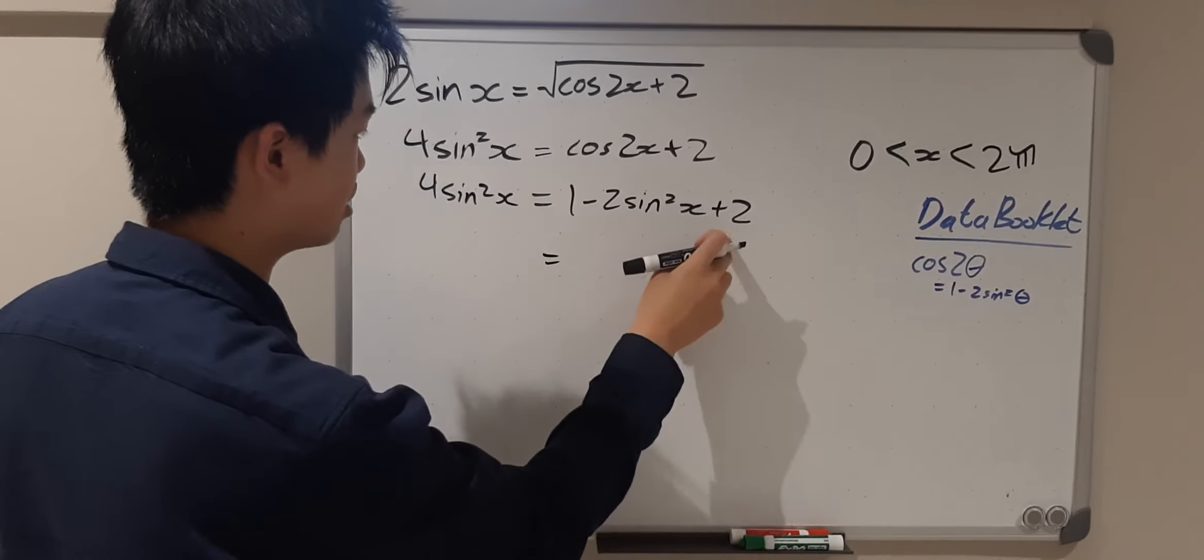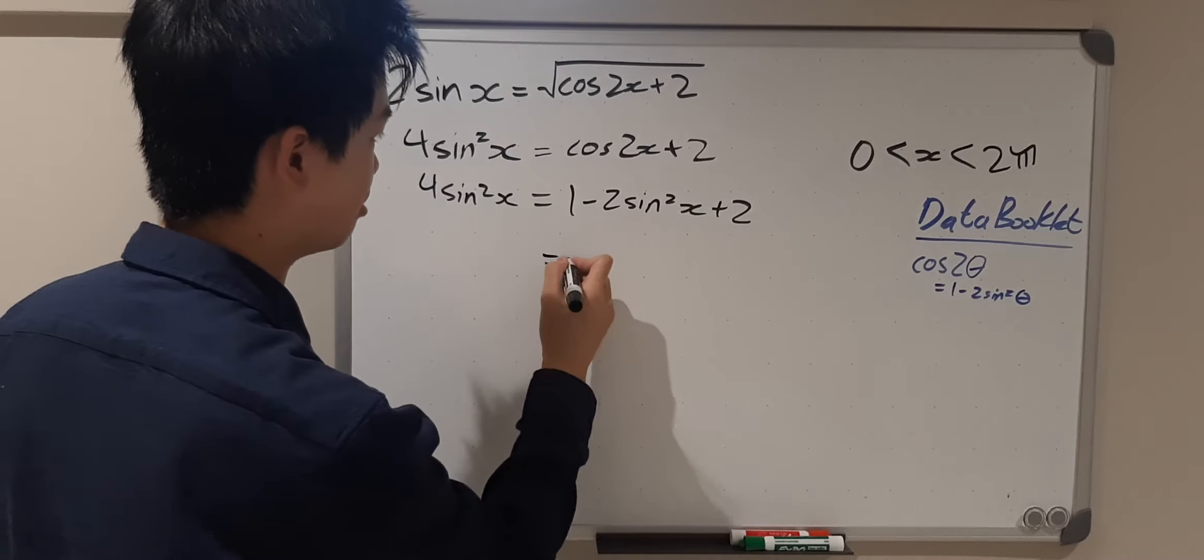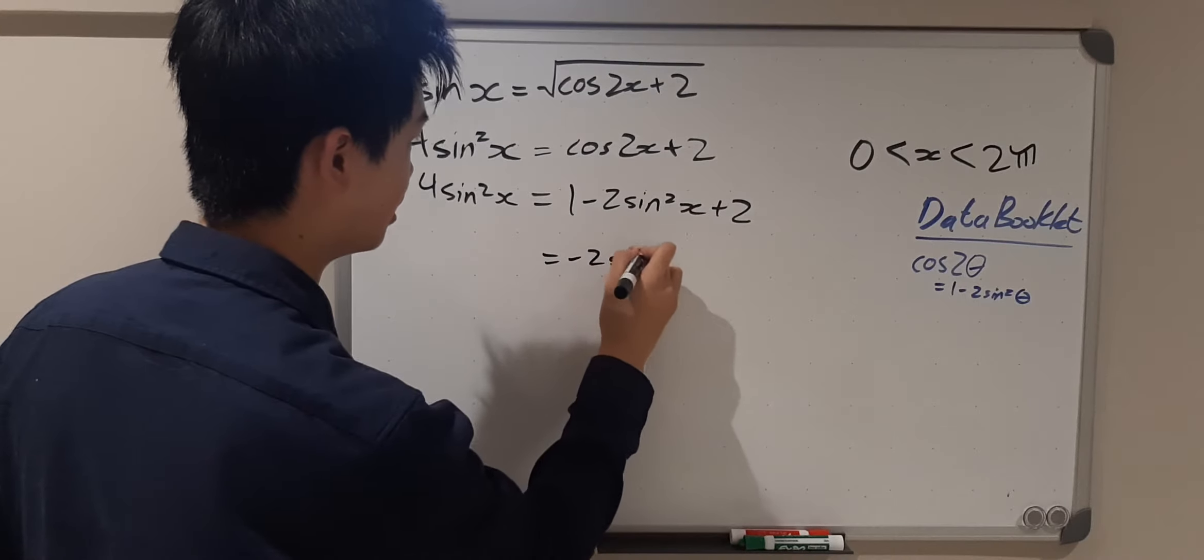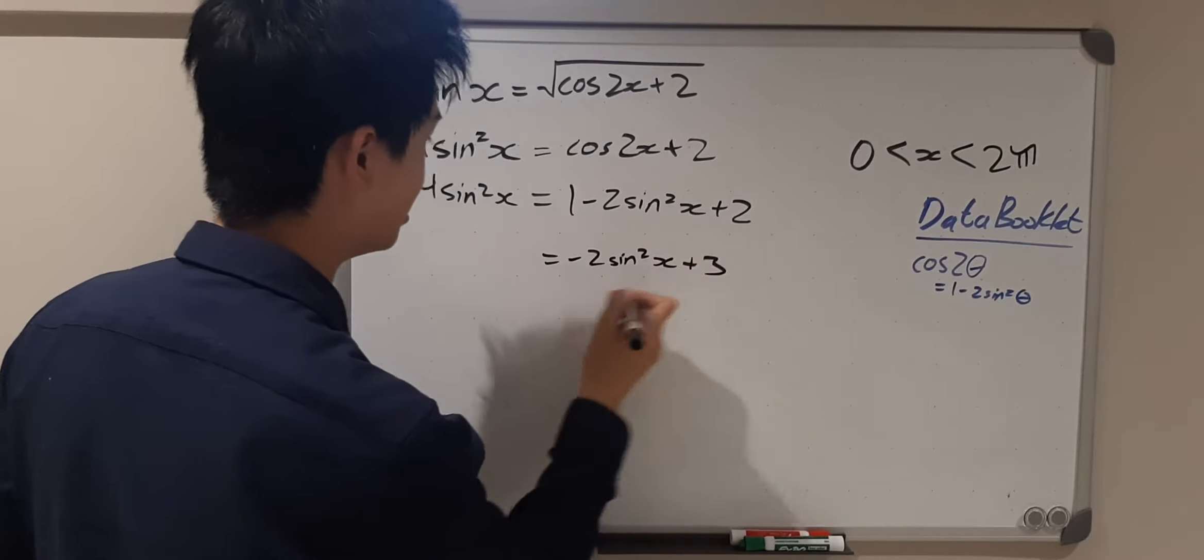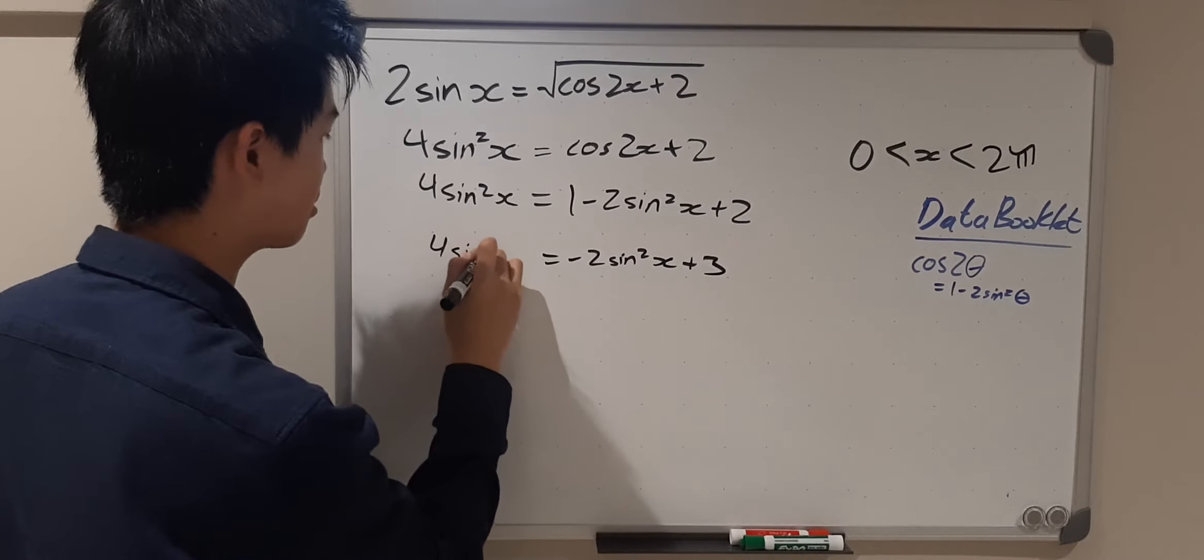Now this 1 and this 2, together they make 3, so -2sin²(x) + 3 = 4sin²(x).